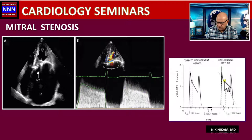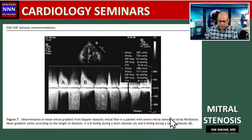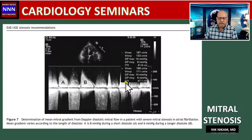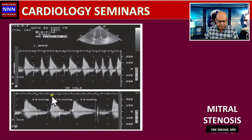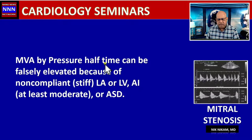In a patient with atrial fibrillation, we face varying gradients from beat to beat. In such cases, we may need to take six to ten beats, average the gradients, and use that to calculate the mitral valve area. Here is an example with mitral stenosis and atrial fibrillation where the gradient varies — 4.8, 5.3, 2.9 — and we just average these gradients to come up with a reasonable answer.